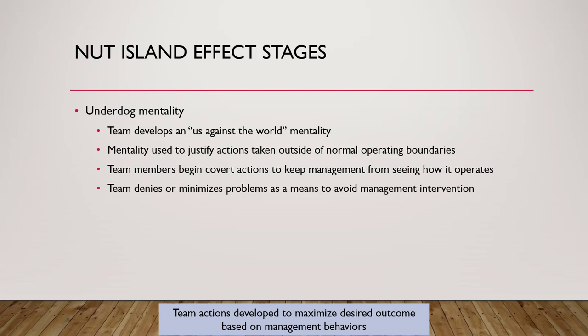The team actually denies or minimizes problems to avoid management intervention. The manager begins to develop a bias viewing the team as highly effective. So when something does come up and the manager asks the team about it, the team gives an excuse — and the manager views that positively because of his bias, even though the team may actually be very ineffective or even causing damage.